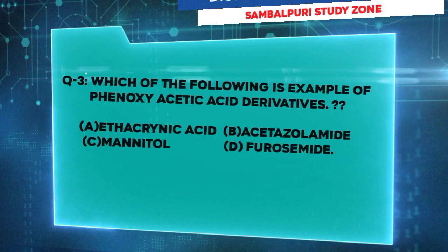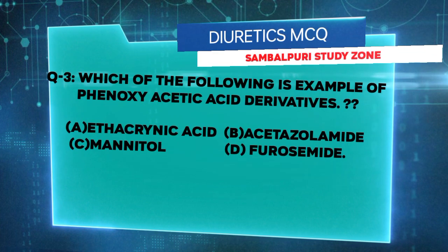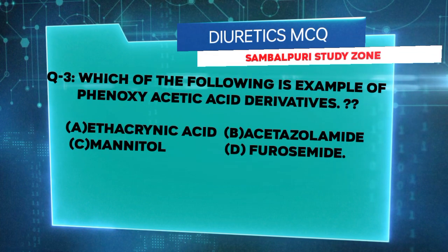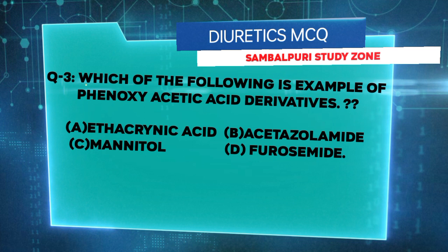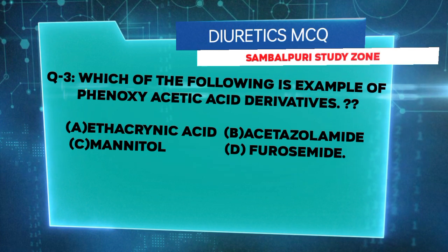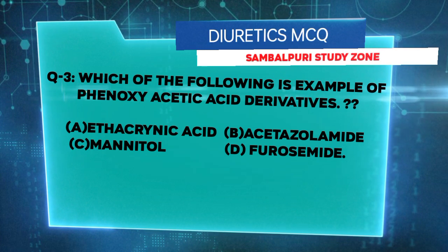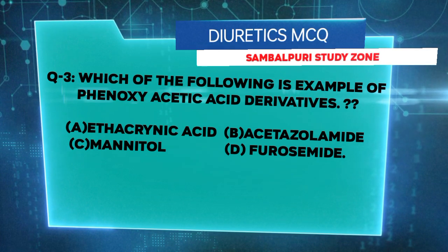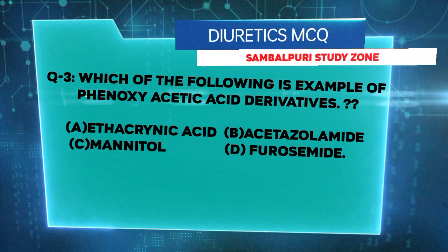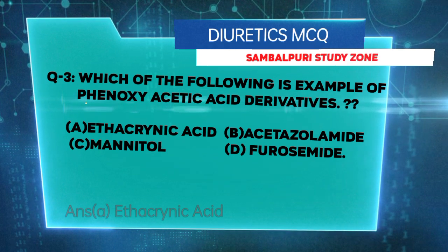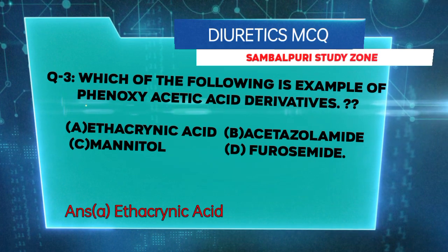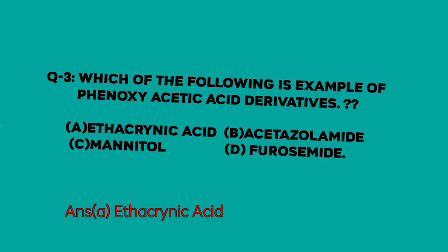Which of the following is an example of a phenoxyacetic acid derivative? Options: ethacrynic acid, acetazolamide, mannitol, furosemide. The right answer is ethacrynic acid.